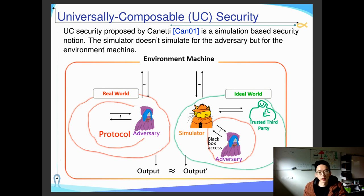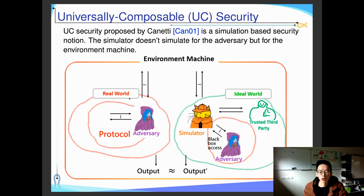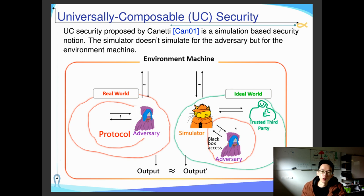In this security definition, the simulator does not simulate for the adversary, but for the environment machine. The environment machine will observe everything in this world. It will interact with either a real-world machine or an ideal-world machine, but it does not know which one it is. In the real world, there is an adversary and the protocol you design. In the ideal world, there is a simulator having black-box access to the adversary, and everyone interacts with a trusted party.